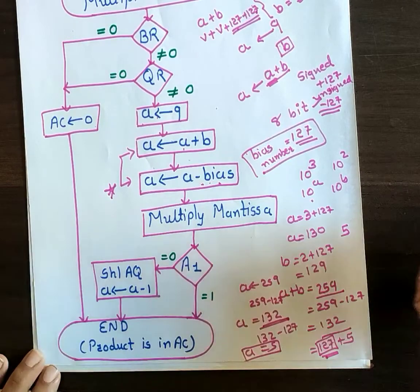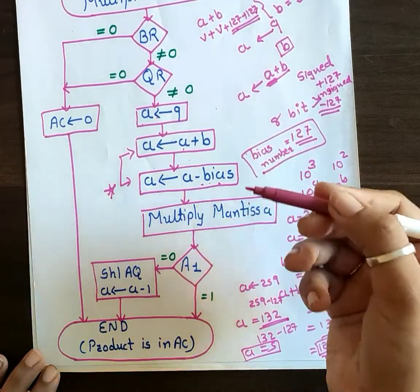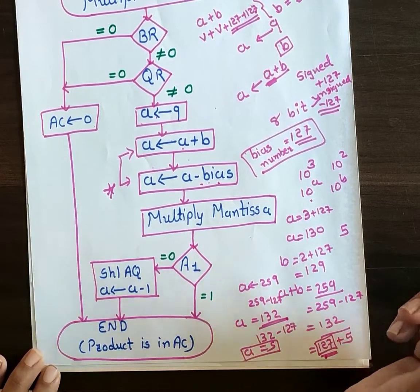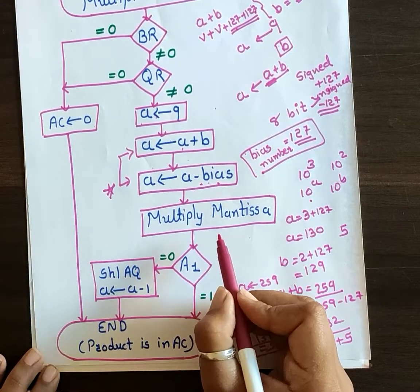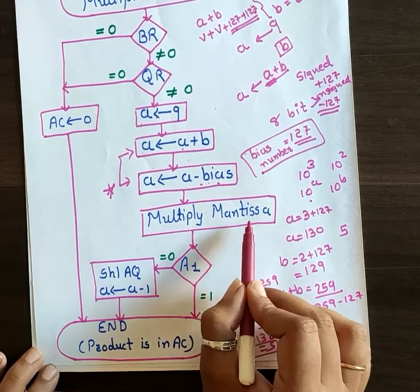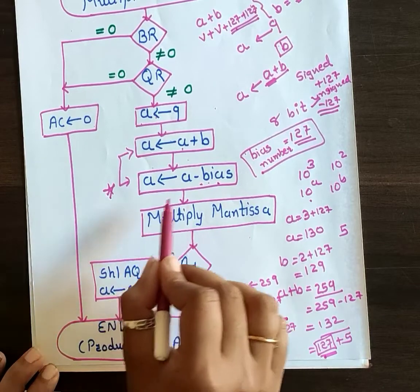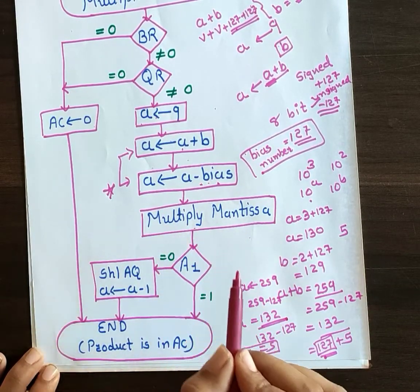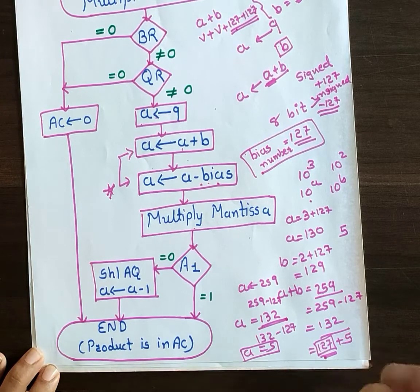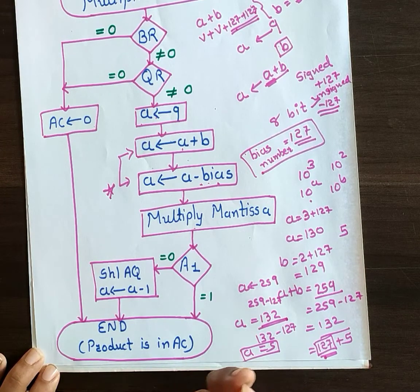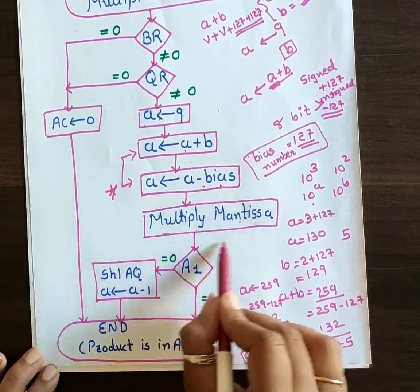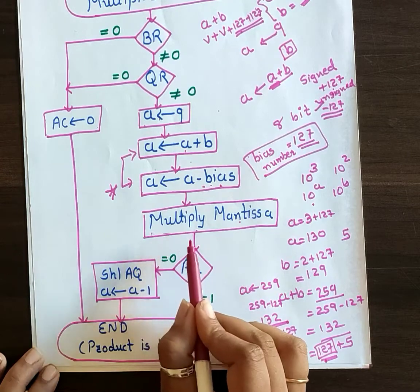Now the exponents are ready — summation done and bias subtracted. Next, we multiply the mantissas. Multiplication is done in the normal way according to any integer multiplication algorithm; you can use Booth's algorithm or any other integer multiplication algorithm. So this step simply multiplies the mantissas.